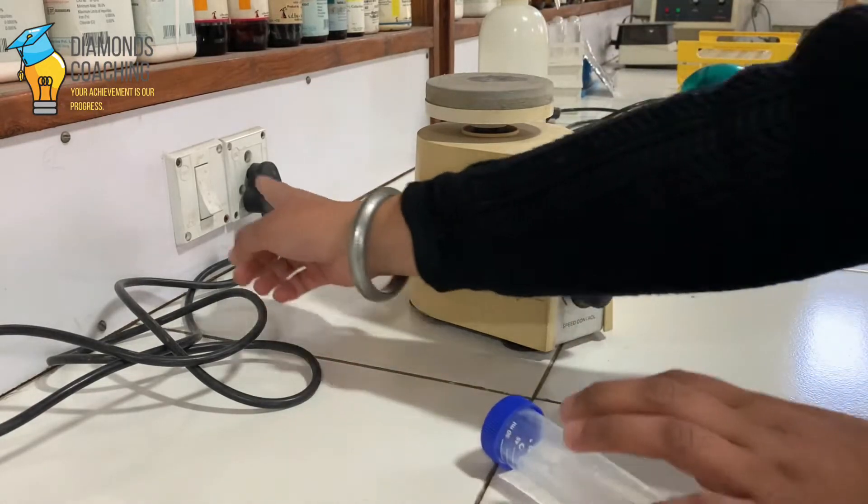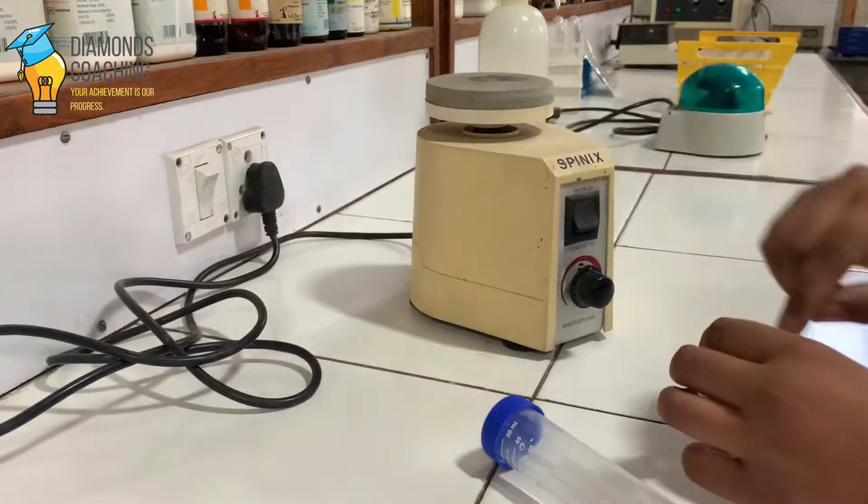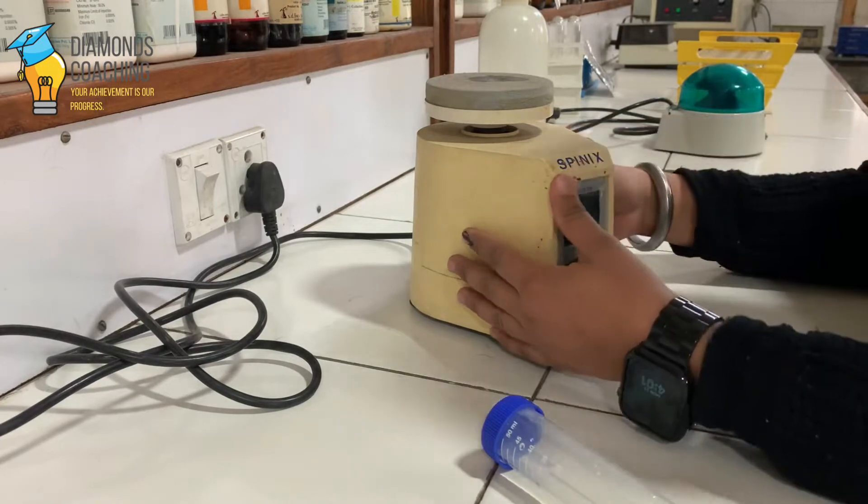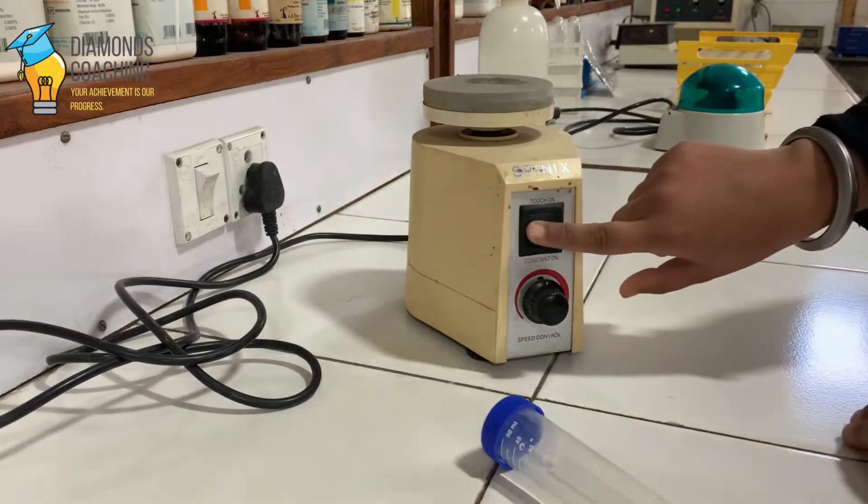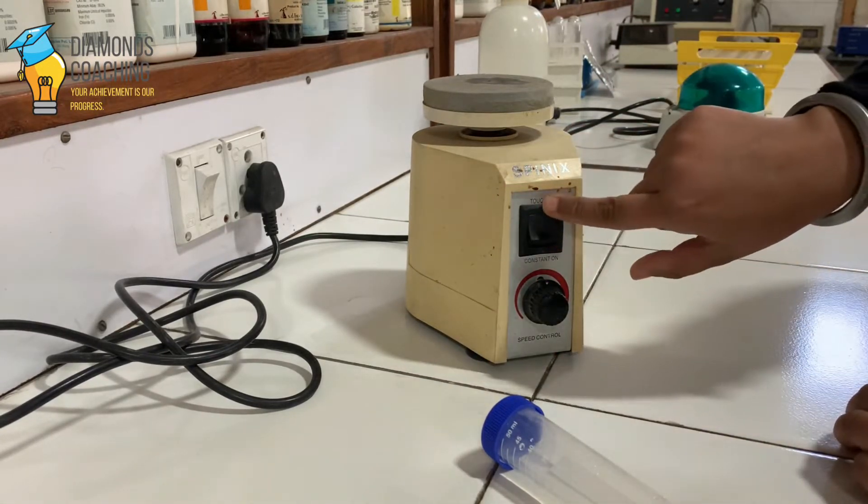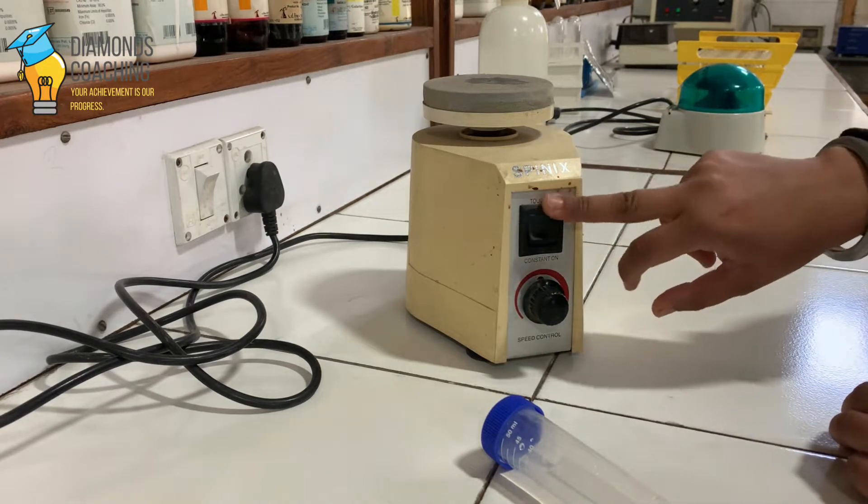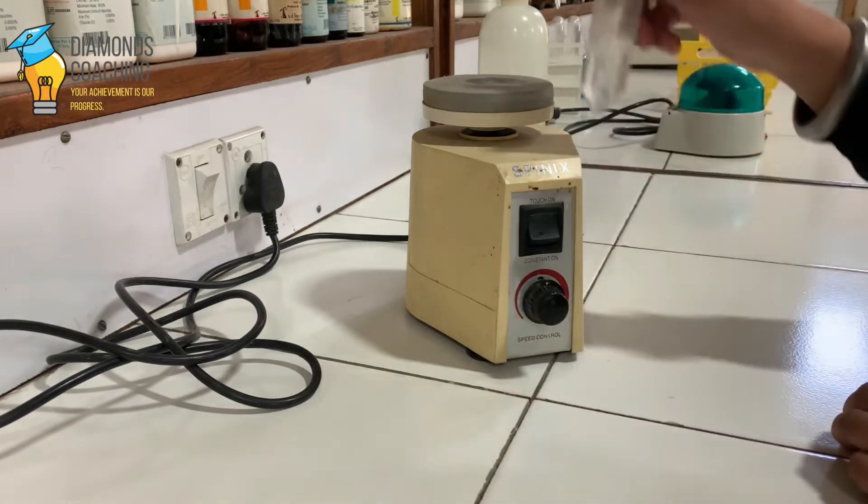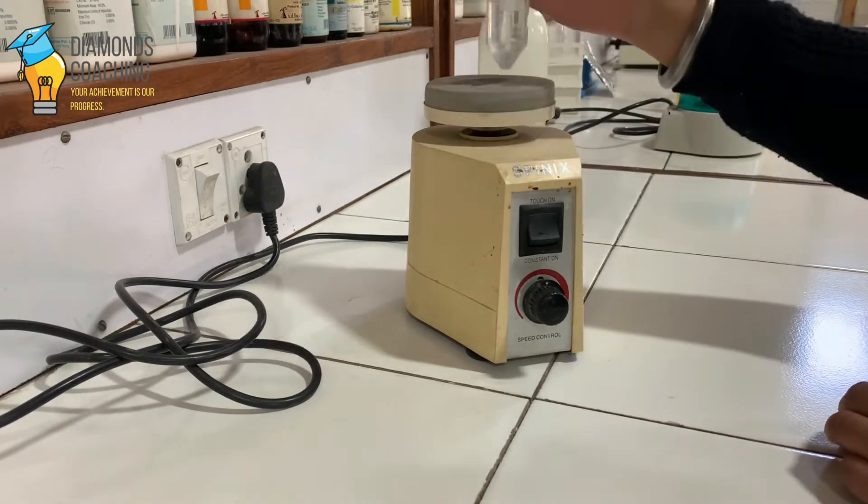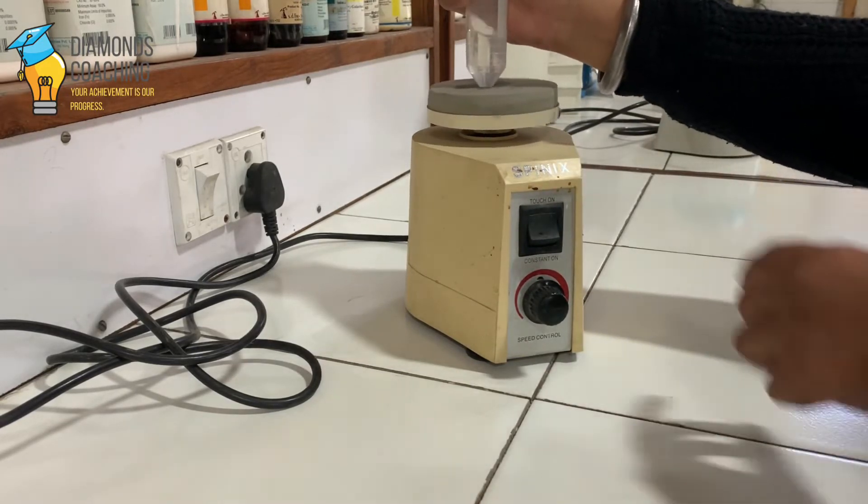So here we switch this on and it has two options: touch-on or constant-on. If we do this touch-on, then it would work only if we place this vial on it. So when we touch this vial it will move. Because the speed is very slow, that's why it's not moving.